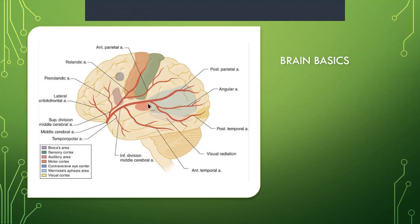If your patient is having problems in the temporal area, the auditory area — cannot hear, cannot discern — middle cerebral artery. If your patient is having problems with vision, it could be middle or posterior, but majority of the time it's not middle cerebral, though it can be.